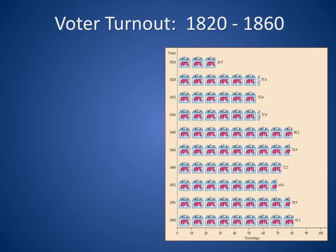Voter turnout from 1820 to 1860 grew exponentially, as you can see in this graph. Jackson eliminated the previous property qualifications, which greatly increased the number of qualified voters. Prior to the election of 1828, the majority of Americans had been satisfied to have the aristocrats elect their president, but now they want the common man.